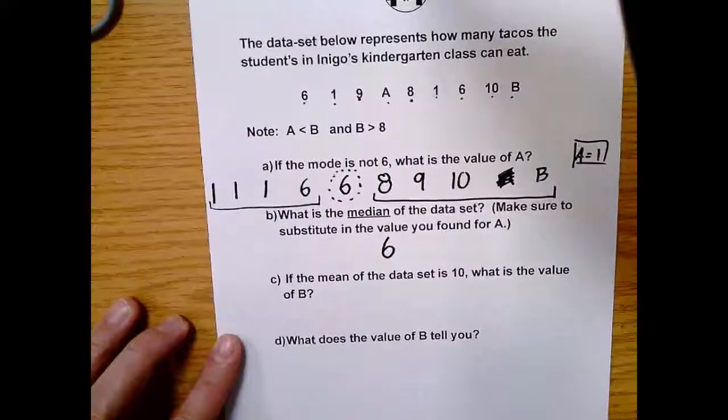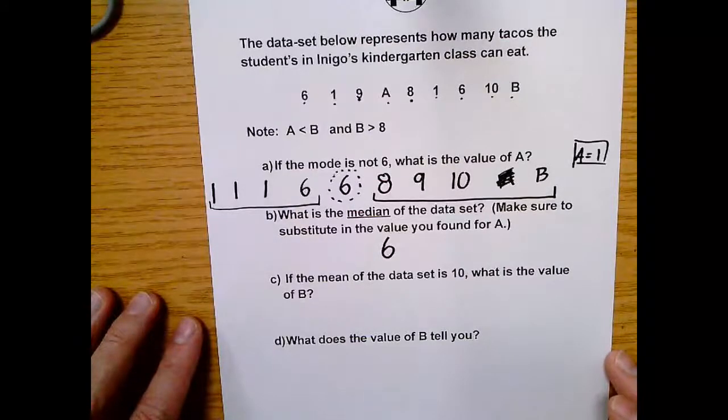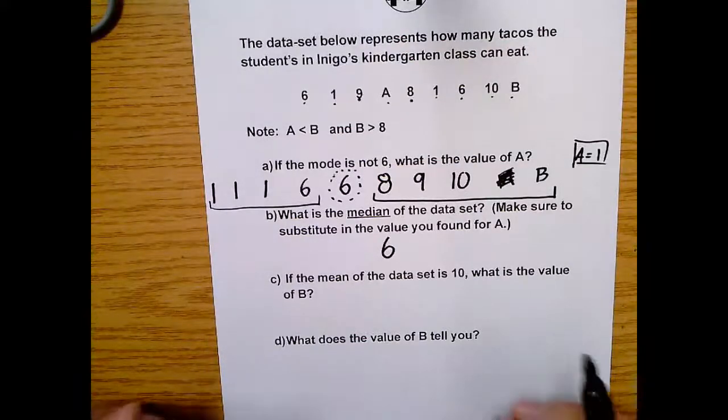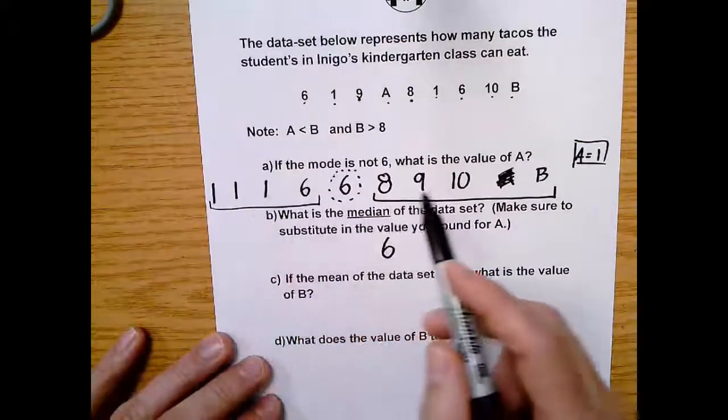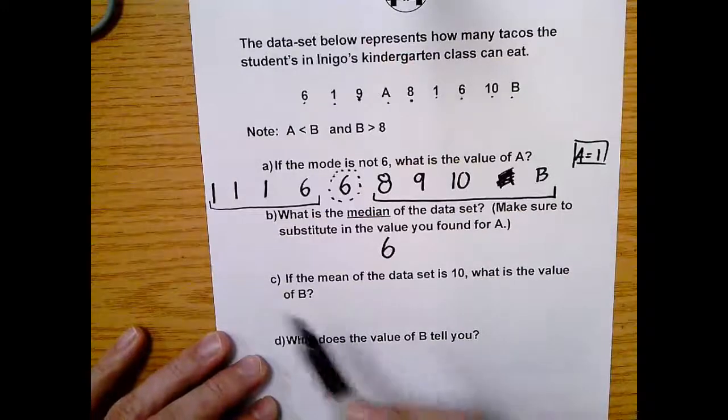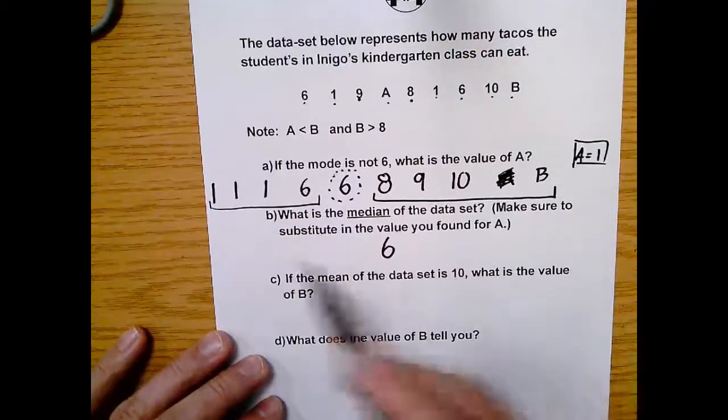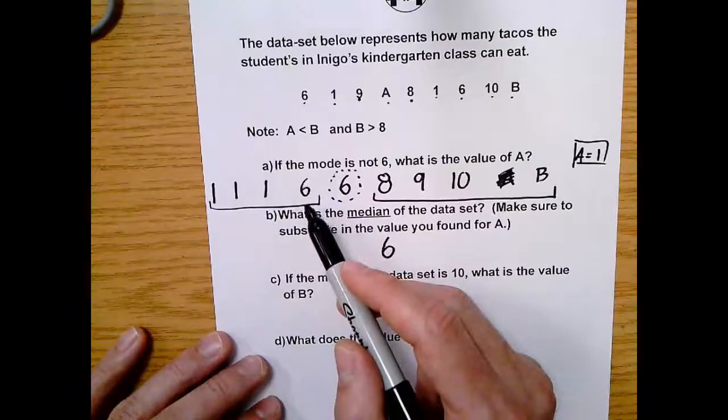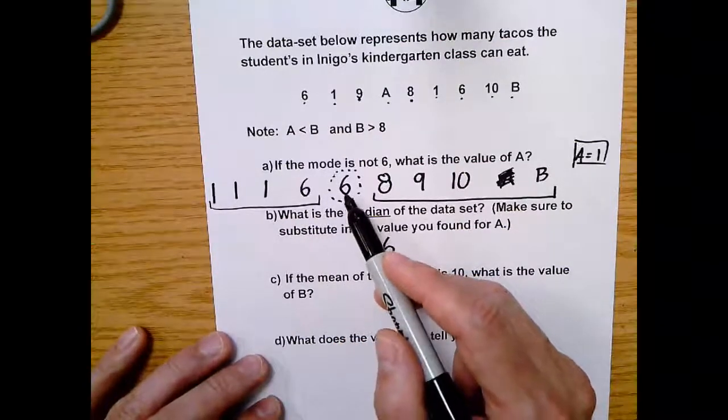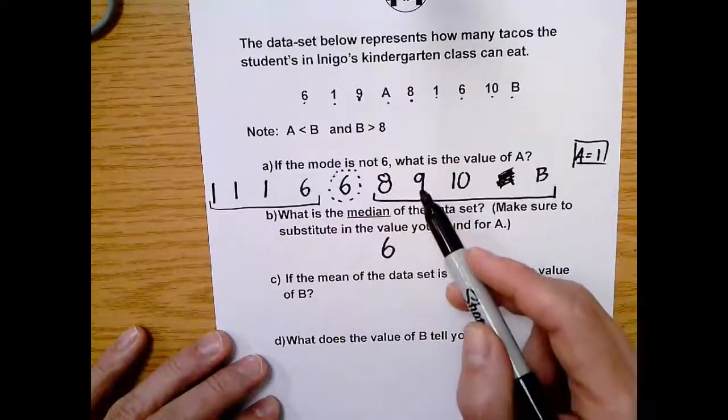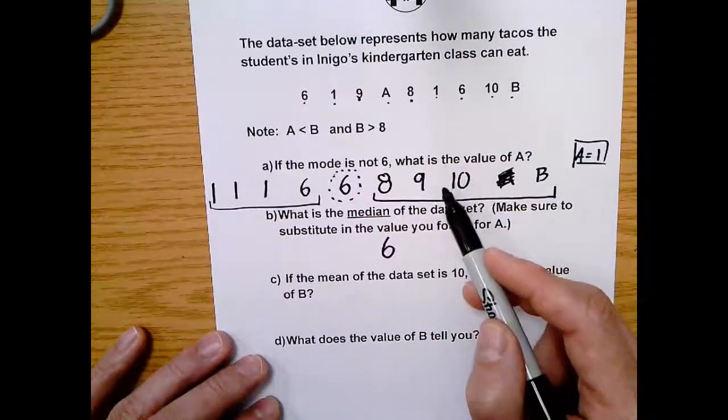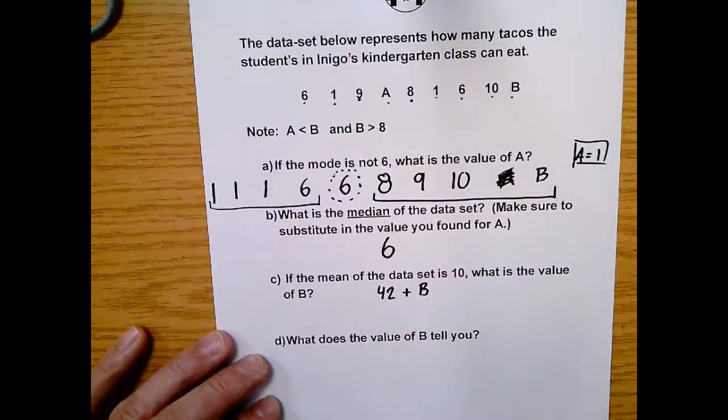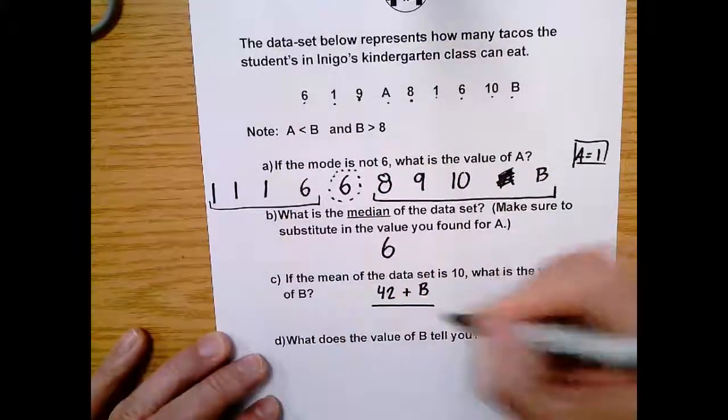It says next, if the mean of the data set is 10, what is the value of B? Okay. So when we look at this, we got to first think to ourselves, well, what does it mean for something to be the mean? All right. So the mean is if you add up the entire data set, divide by the number of terms. In this case, that would be nine. And then that would all equal 10. So first, we need to add up everything in our data set. So one plus one plus one, that's three. Three plus six is nine. Nine plus six is 15. 15 plus eight is 23. 23 plus nine is 32. And 32 plus 10 is 42. And then plus B. And remember, we can't add the B in directly because they are unlike terms. So that's the top part.